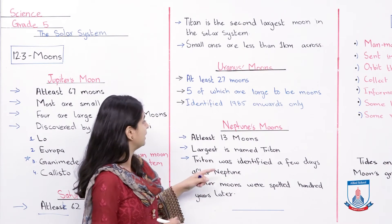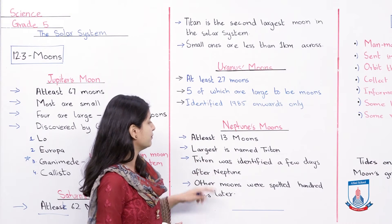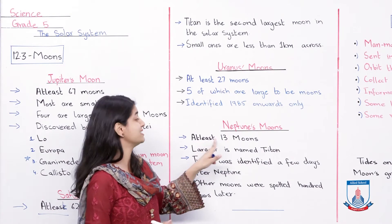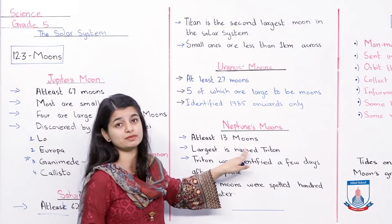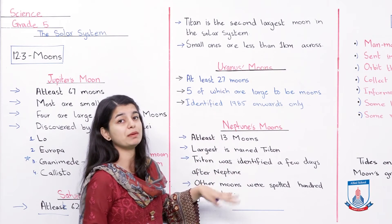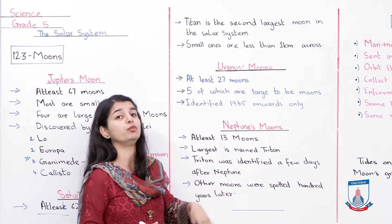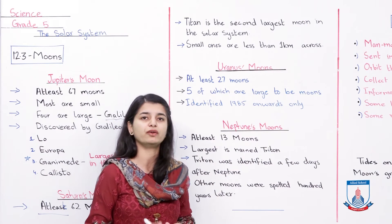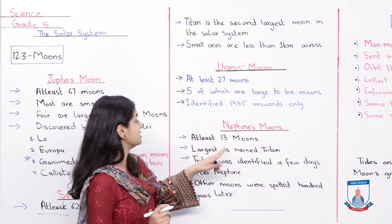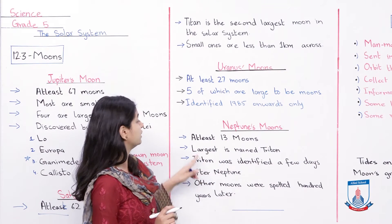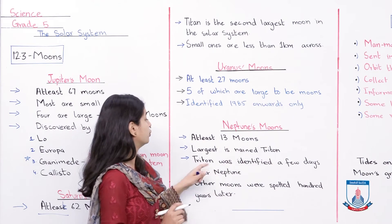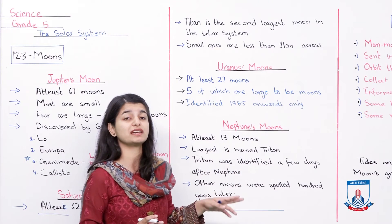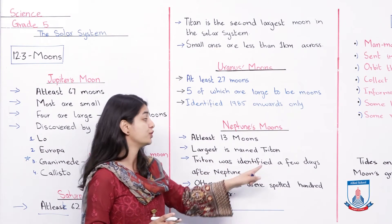Usse aage padhte hain Neptune ke moons ke baare mein. Neptune ke at least 13 moons hain. Toh Uranus wagairah se kam hain, but there's still a lot more than Earth, kyunki Earth ki kitne moons hain? One. Largest is named Triton. In mein se jo sabse bada moon hai uske 13 moons mein se, uska naam hai Triton.